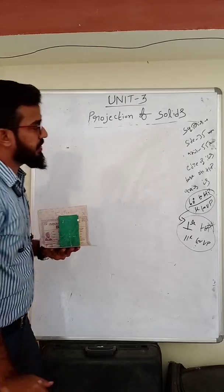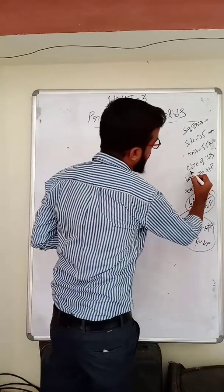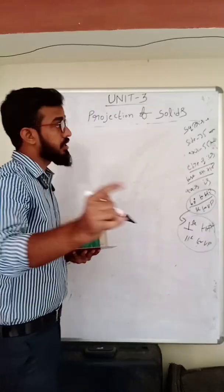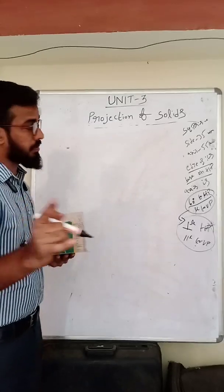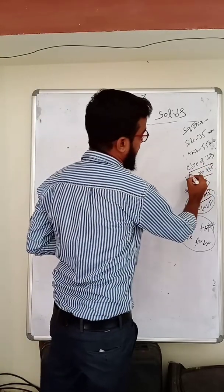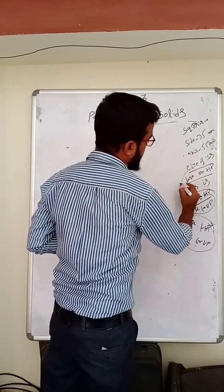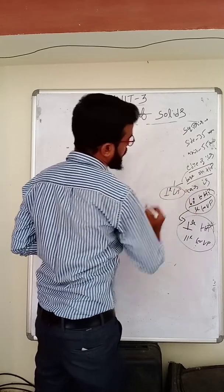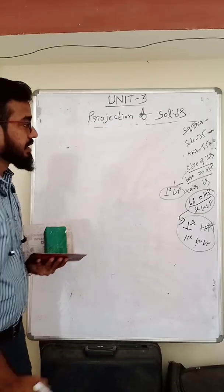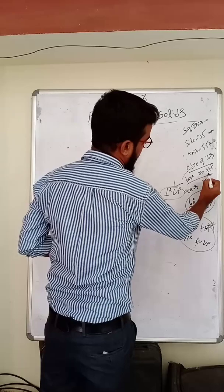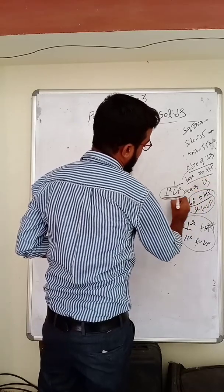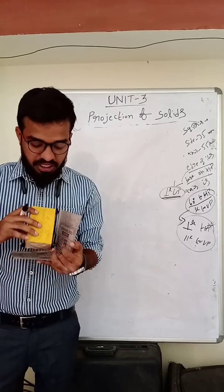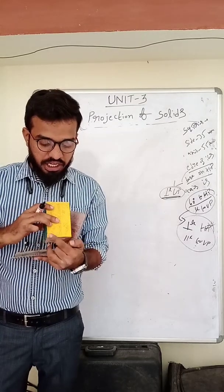What is the condition given here? The edge of its base is on HP. That means keep that edge perpendicular to VP.